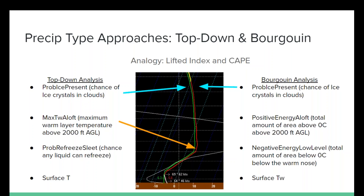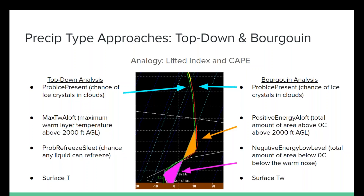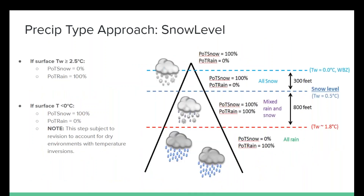The next area of interest is whether we have a warm nose. In the top-down approach, the proxy for that is the max wet bulb temperature aloft, and on the Burgoyne side it's positive energy aloft — you're looking at the total area. Further down is the ability for liquid hydrometeors coming out of that warm nose to refreeze, represented by probably freezing in the top-down and negative energy at low levels. Combining all these, along with surface wet bulb, gives you your precipitation type probabilities.